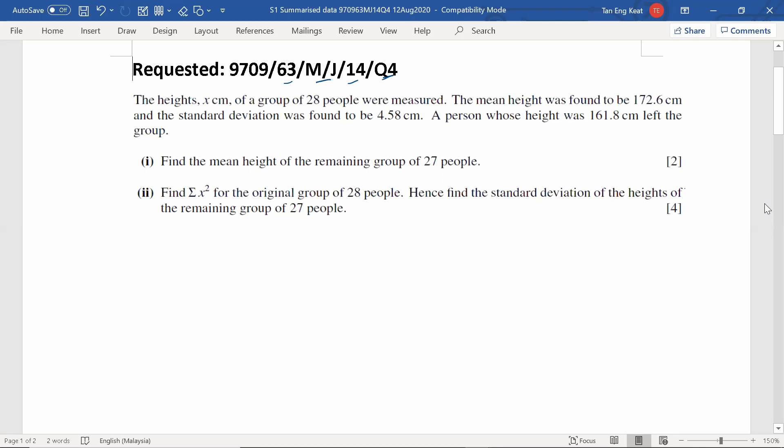The topic is about summarized data. The heights, X cm, of a group of 28 people were measured. The mean height was found to be 172.6 cm and the standard deviation was found to be 4.58 cm. A person whose height was 161.8 cm left the group. Find the mean height of the remaining group of 27 people.